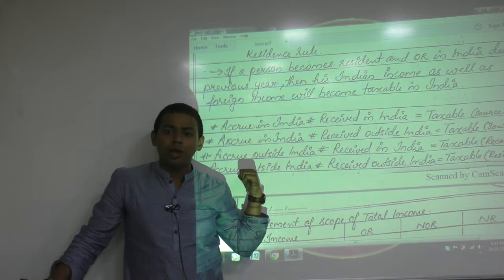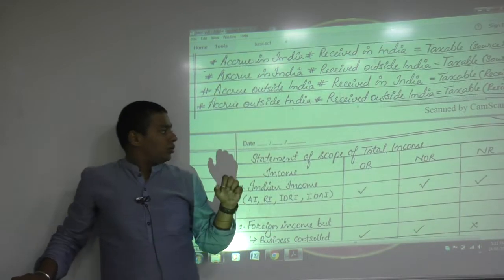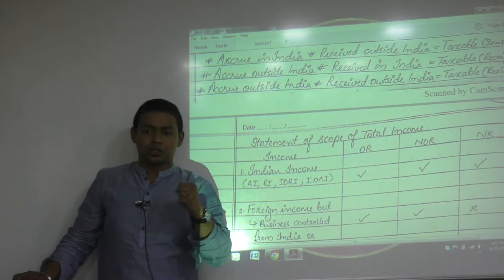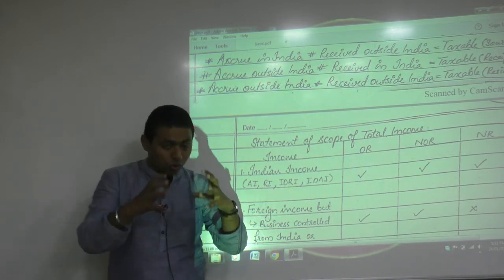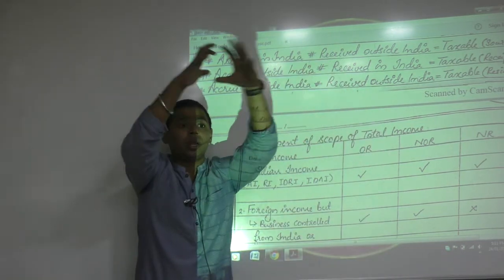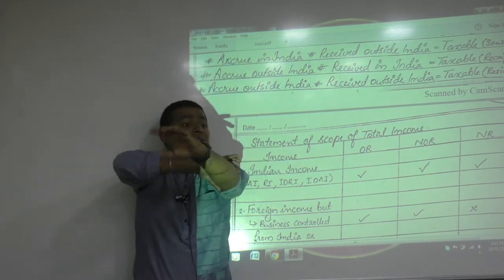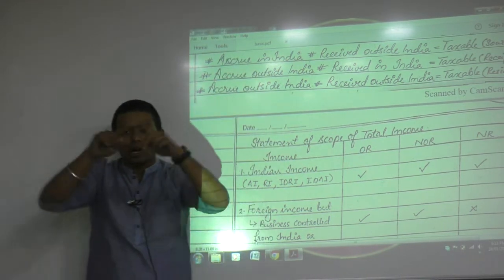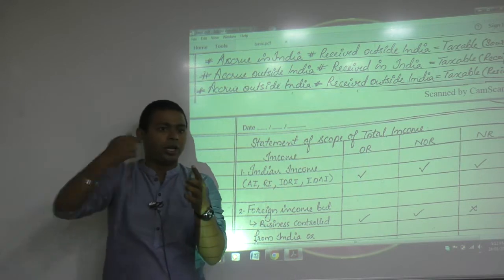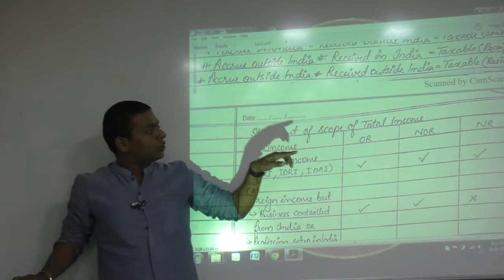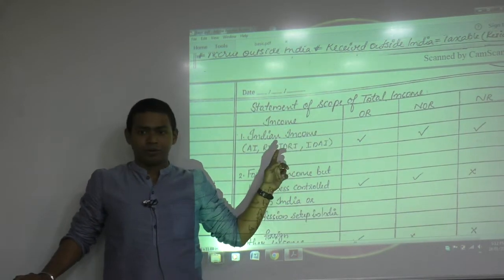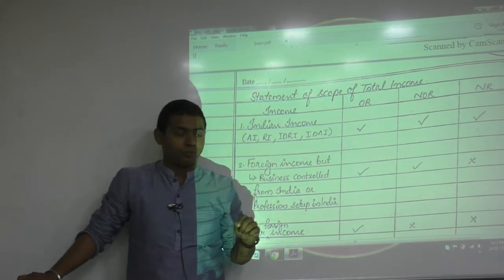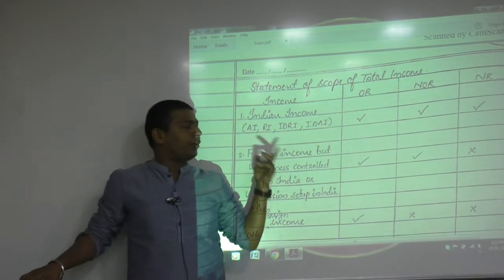Therefore we call Section 4 the 'bank moon' section because it is the charging section. It charges not only on Indian income but on total income, and total income means Indian income as well as foreign income. That chart you have already written — income accrued in India, income received in India — based on that we created the statement of scope of total income.